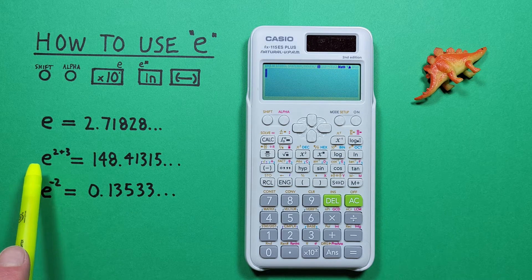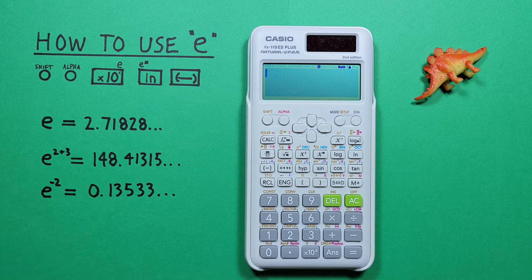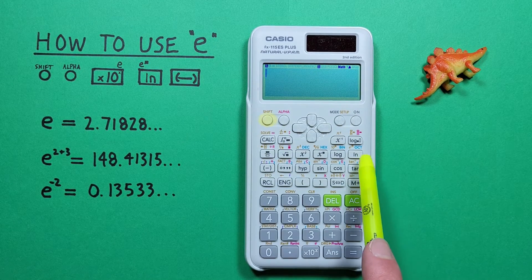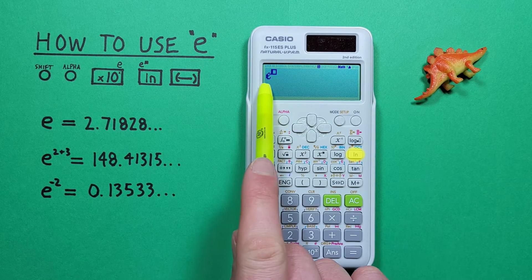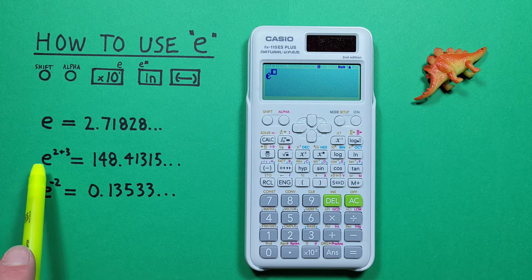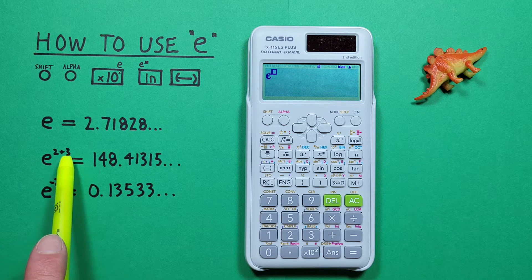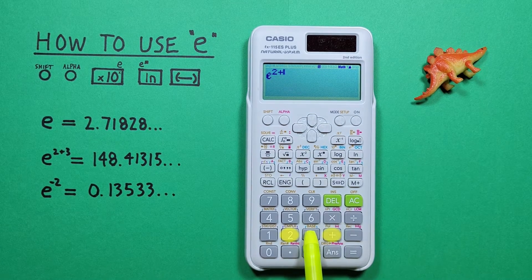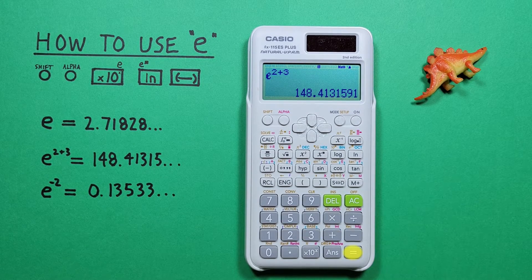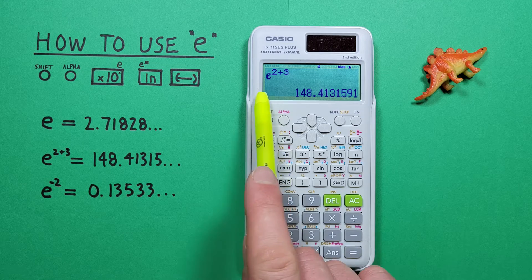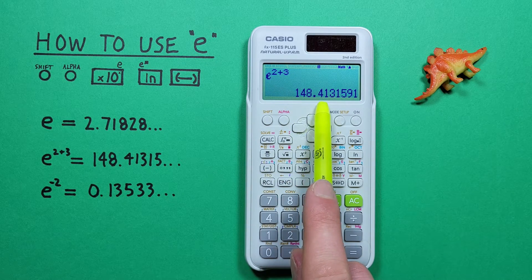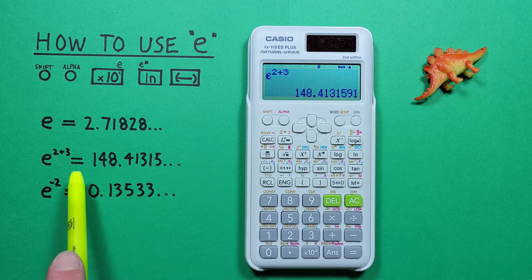If we want to get e with an exponent, what we have to do is press shift ln, and we get e with an exponent box. So if our exponent is 2 plus 3, we can now enter that here, 2 plus 3, and press equals. We get e to the power of 2 plus 3 equals 148.41315, etc., which is correct.